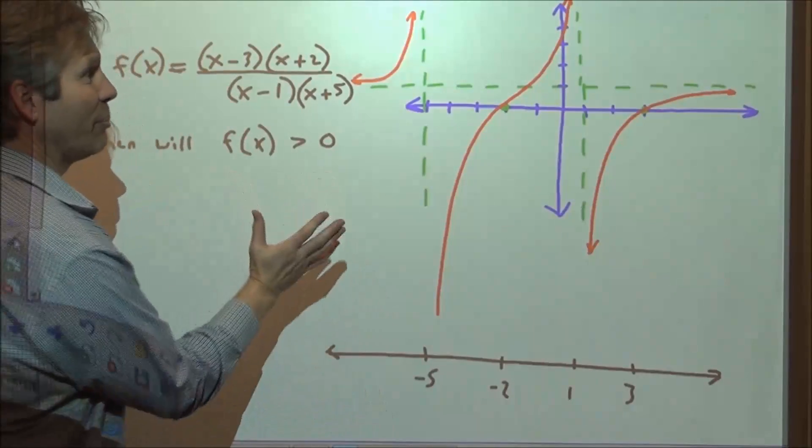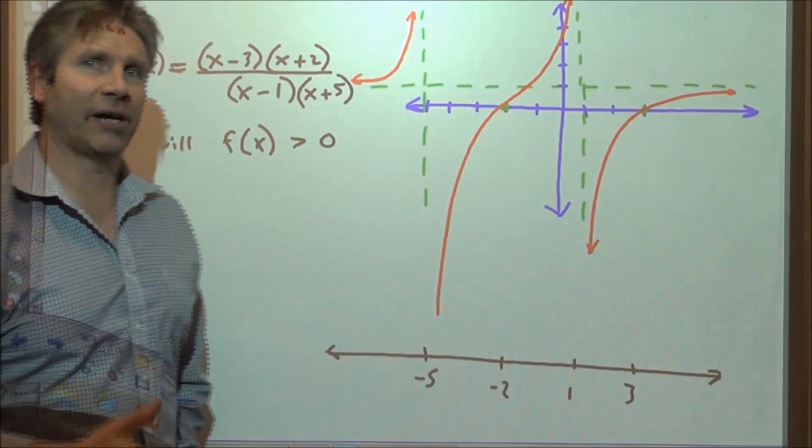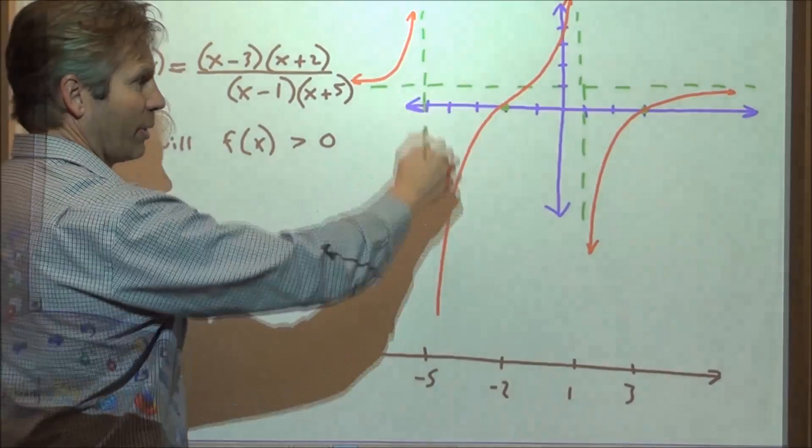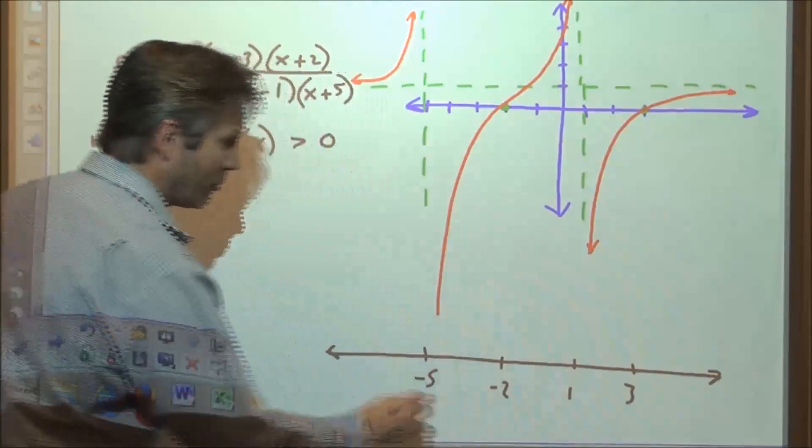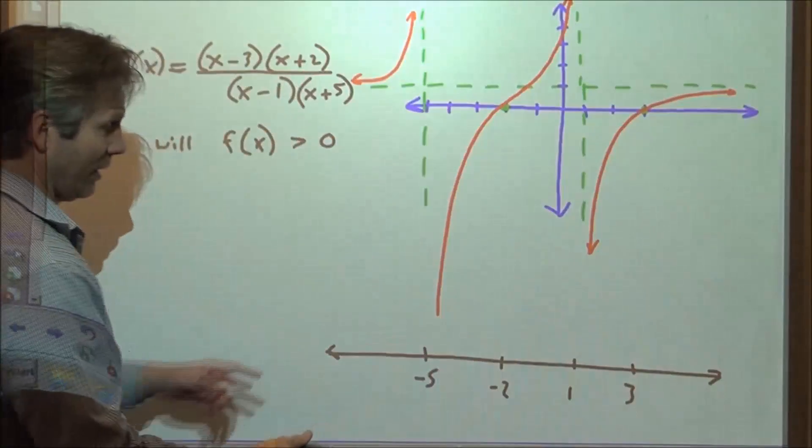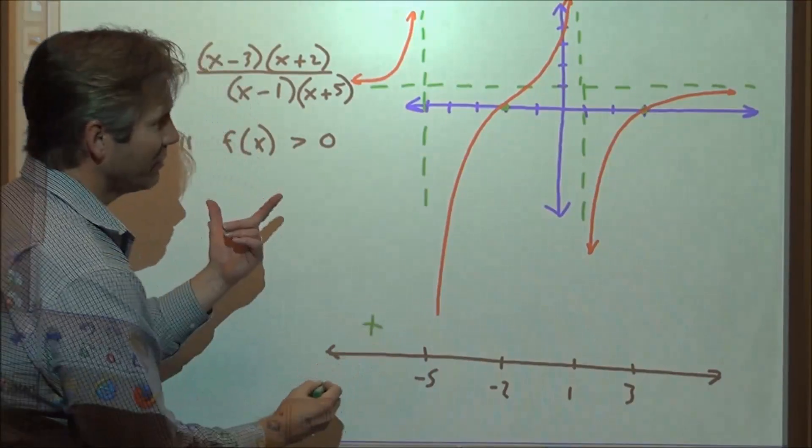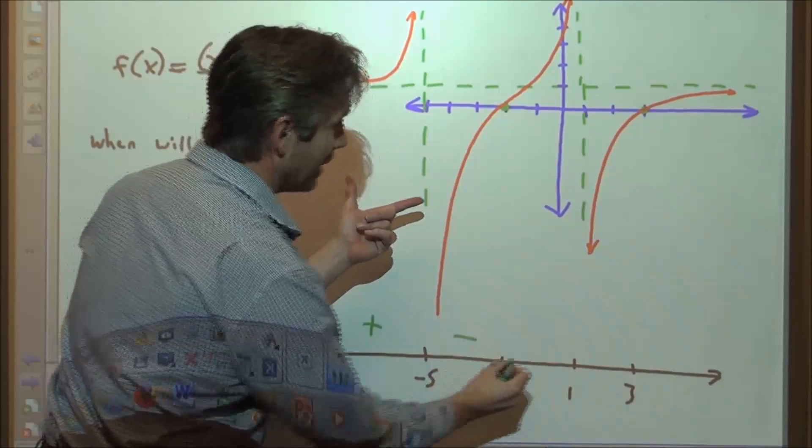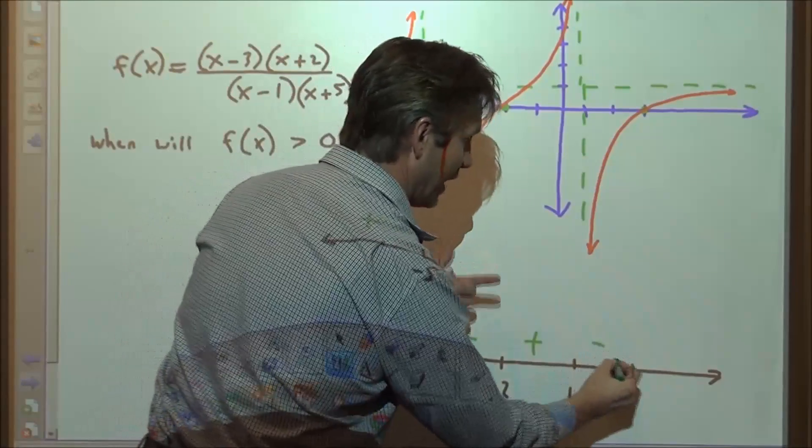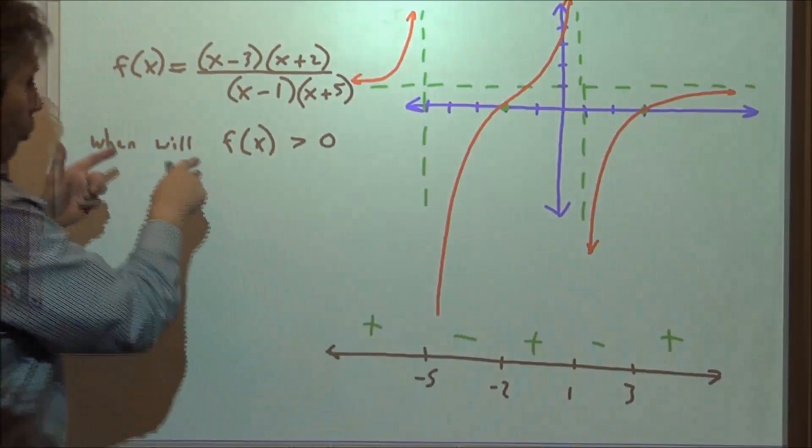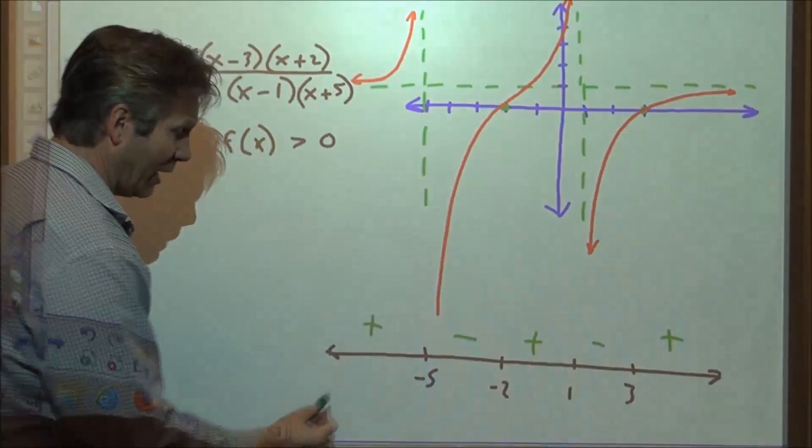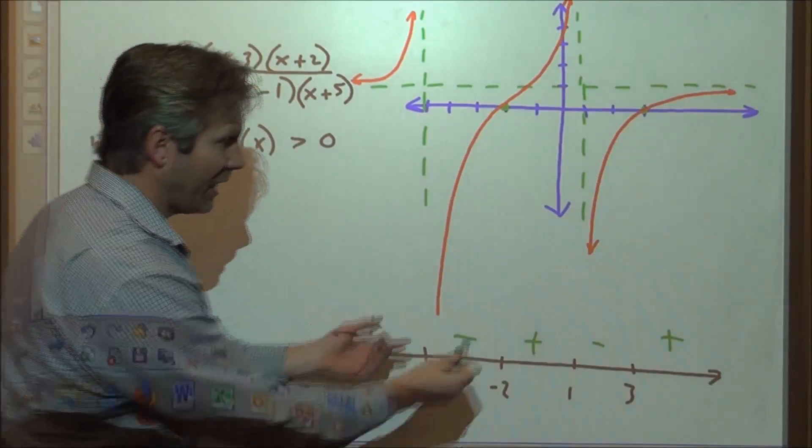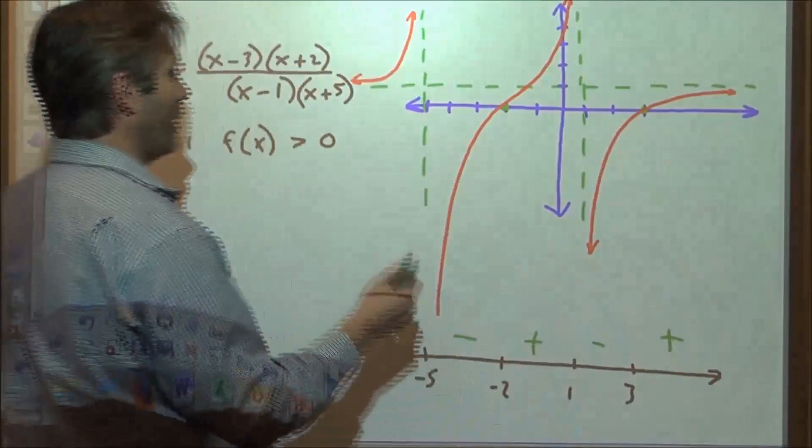Whenever a function is above the x-axis, the value of the function is positive. Whenever it's below the x-axis, the value is negative. So we could reconstruct the x-axis and say the function is positive, then negative, then positive, then negative, then positive. When will the function be greater than zero? When the function's positive, from negative infinity to negative five, and from negative two to one, and so on.